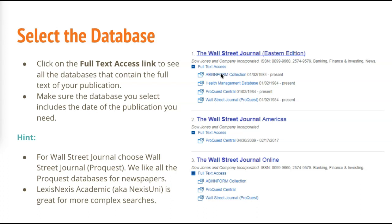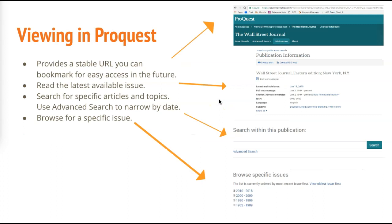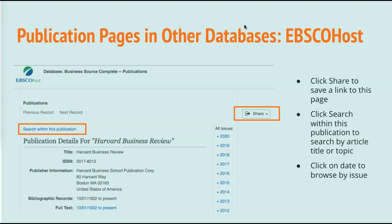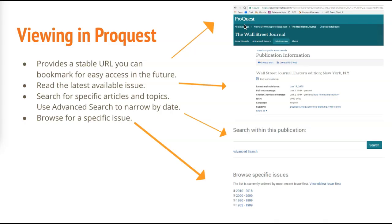It just takes practice. Clicking on Wall Street Journal ProQuest takes me to a publication page. All of the items found through the Find Journal tool will take you to a publication page. Different companies produce these databases, so the publication pages might look a little different. This is what one looks like in EBSCOhost, but some features are the same. First off, there's usually a place where you can do searching — you can search within this publication, and that's where you can put in an article title.